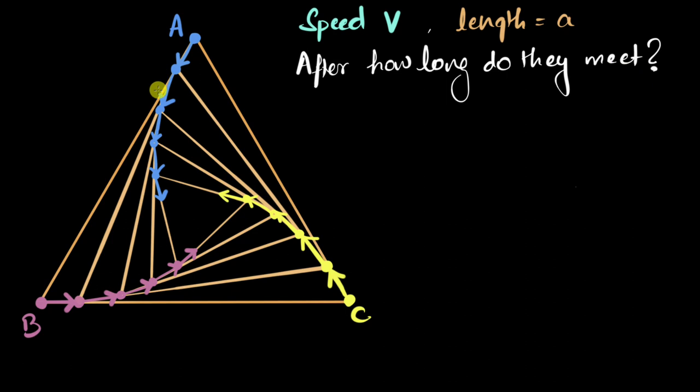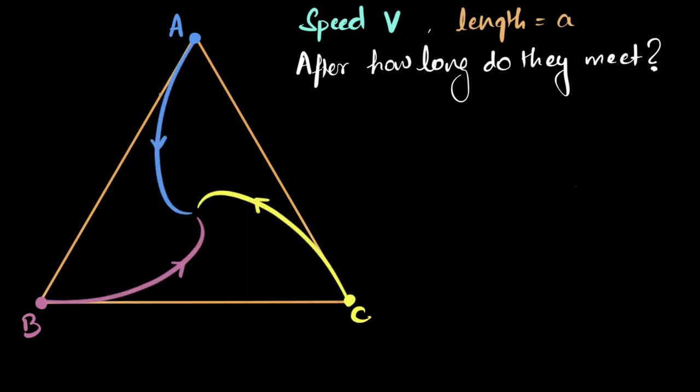And if we were to look at what would actually be happening, because this velocity will be continuously changing, then the final picture would look somewhat like this. Now we have visualized the problem. We need to figure out how long it takes for them to all meet towards the center. Now, how do I do that? I know the speed, the speed is going to be the same V, but I don't know the distance. This is a very weird curve distance. I don't know what that is. So how am I supposed to find the time taken?